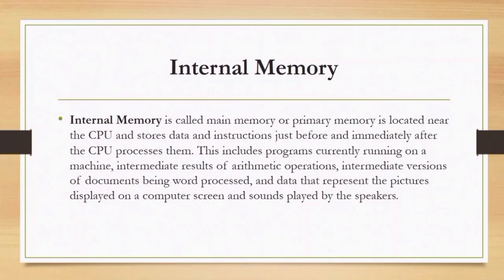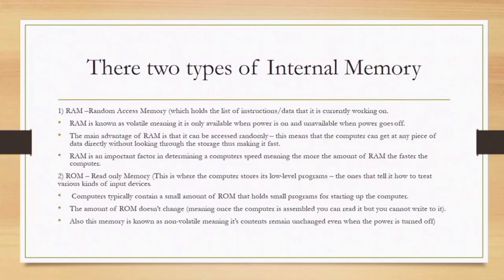Under internal memory, we have two types: RAM and ROM. RAM stands for Random Access Memory, which holds the list of instructions or data currently running on a machine. RAM is known as volatile, meaning its contents can be lost when power is lost. The main advantage of RAM is that it can be accessed randomly — the computer can get to any piece of data directly without searching through all the storage, making it fast.